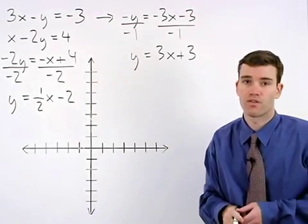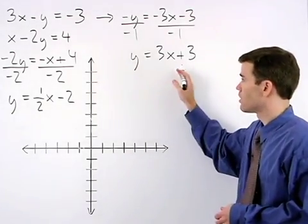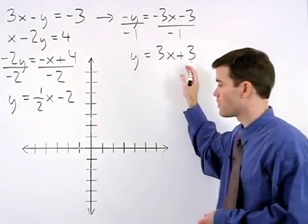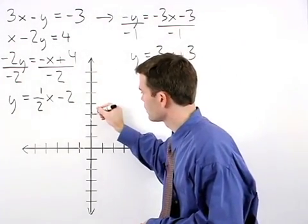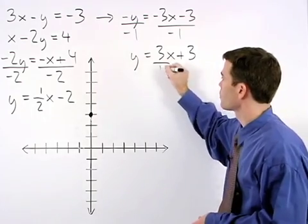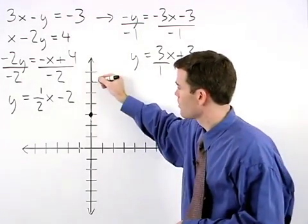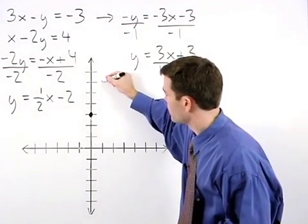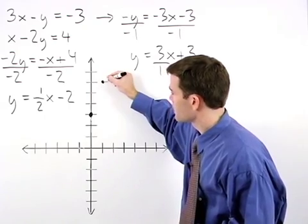Now we're ready to graph our lines. For our first line we have a y intercept of 3 and think of our slope as 3 over 1. So we go up 3 and to the right one to plot a second point.